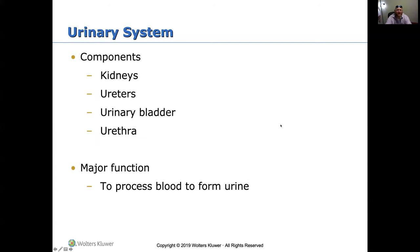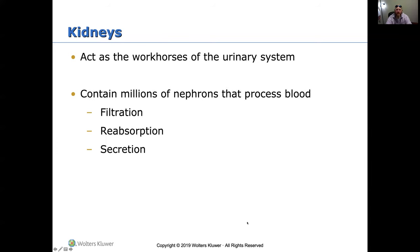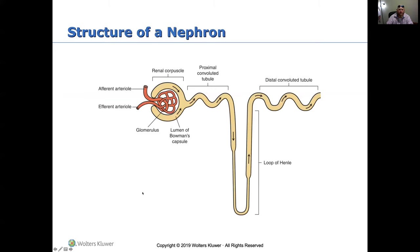The urinary system's components are the kidneys, ureters, urinary bladder, and urethra. Its major function is to process blood to form urine — basically excreting items you don't need from your body. The kidneys are the workhorses of the urinary system, containing millions of nephrons. They process and filter blood through filtration, reabsorbing things you need and secreting things you don't.